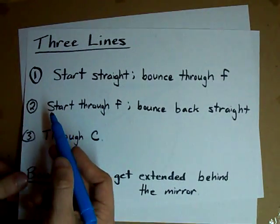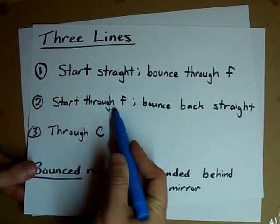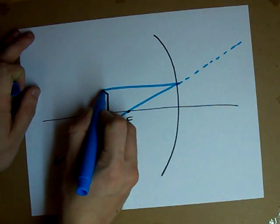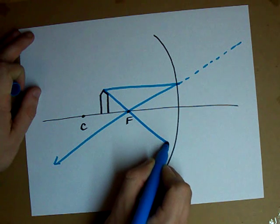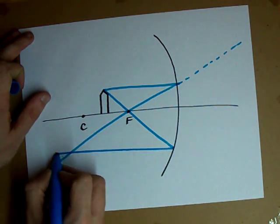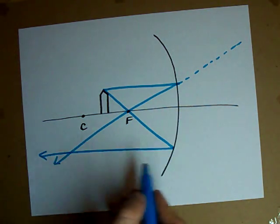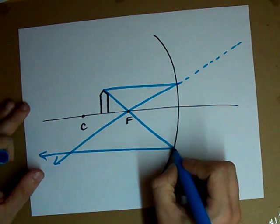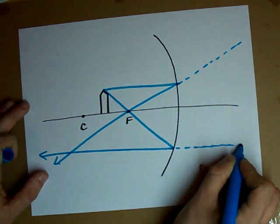The second line, start out with a line that goes through F and bounce back straight. So start at the pencil tip again, go through F, and once you hit F, I want you to bounce back straight. Parallel to the horizontal line. Don't forget, the bounced ray gets extended backwards.